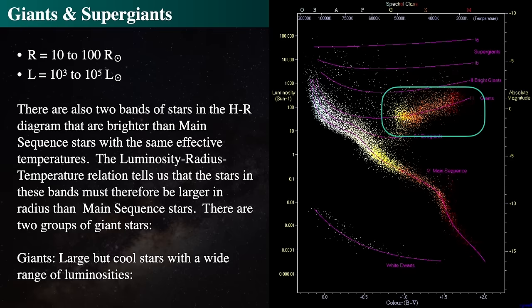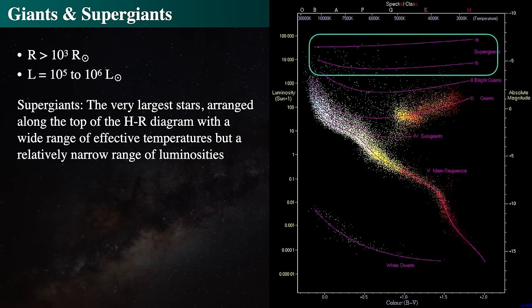The next group is Giants and Supergiants — stars brighter than main sequence stars but with the same temperatures, so they must be larger, as the luminosity-temperature relation requires. Giants have radii 10 to 100 times the Sun, and luminosities from 1,000 to 100,000 times the Sun. Supergiants populate the uppermost reaches of the HR diagram. Their radii can exceed 1,000 times that of the Sun, and their luminosities can reach up to a million times that of the Sun.